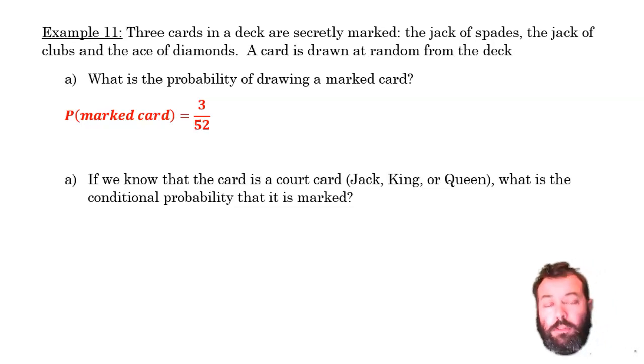Well, there are 12 court cards, and two of them are marked—the Jack of Spades or the Jack of Clubs, but not the Ace of Diamonds. The Ace of Diamonds hasn't been drawn. We may have drawn the Jack of Spades or the Jack of Clubs.